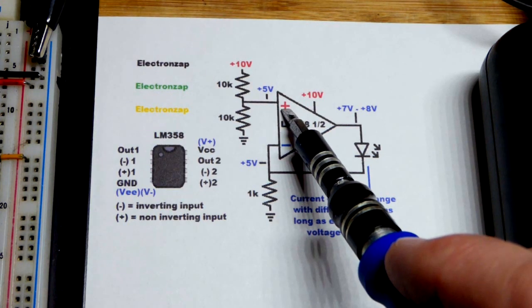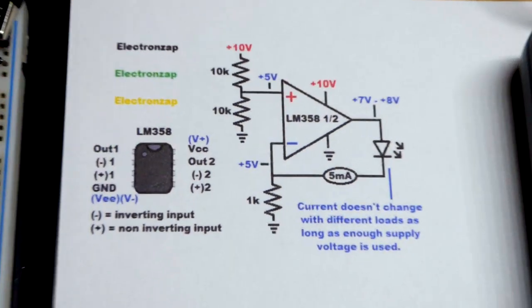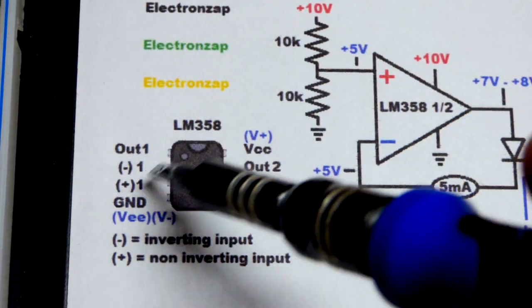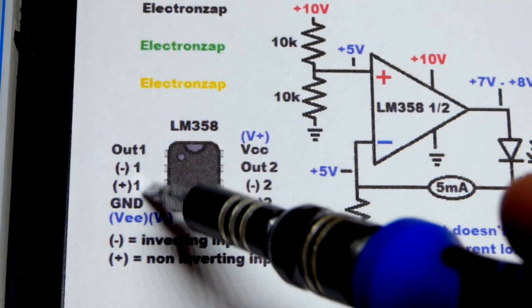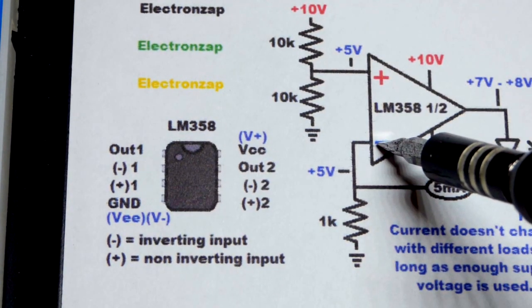But on the integrated circuit that we're going to use, the inverting input is above the non-inverting input. So we got the non-inverting input above the inverting input on the schematic.